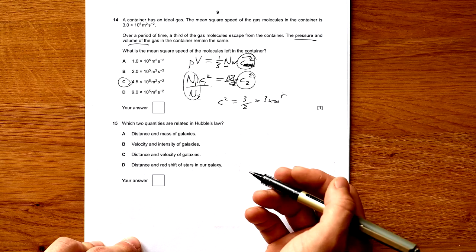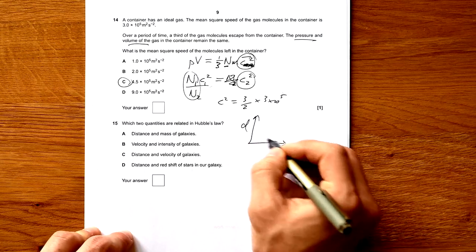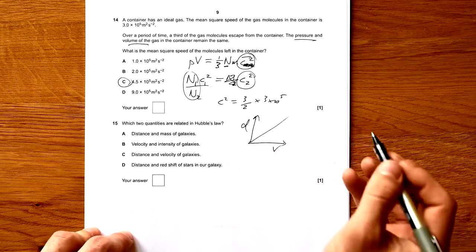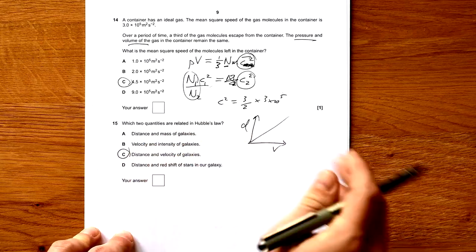Question 15: Which two quantities are related in Hubble's law? Well the graph we have is d against v and we have a nice straight line. It's distance and velocity of galaxies.